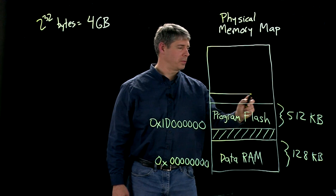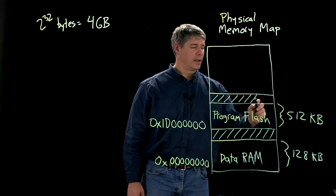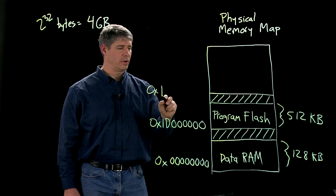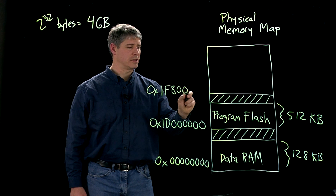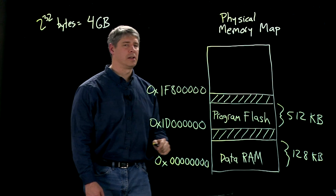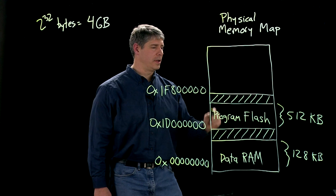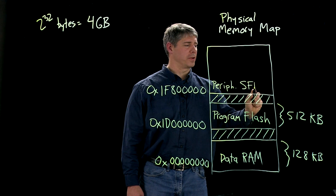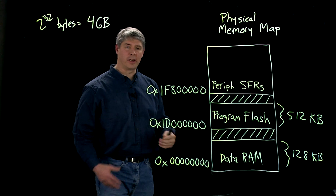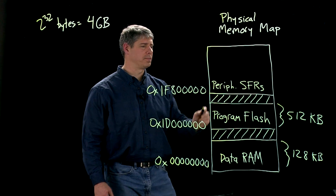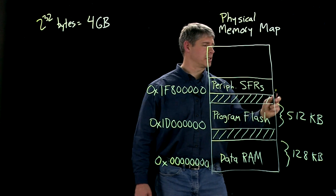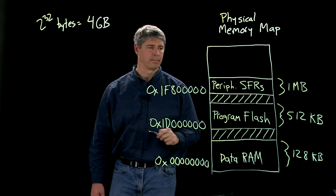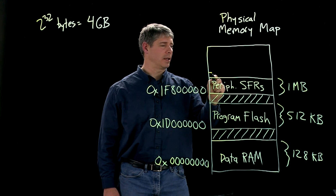We have another period where there's nothing, and by the way, this is not drawn to scale. Then starting at 0x1F800000, we have the peripheral special function registers. These are the registers we write to in order to change the functions of the pins, for example. That region is 1 megabyte long, and then again we have a dead region.